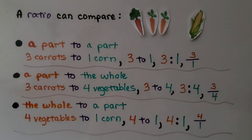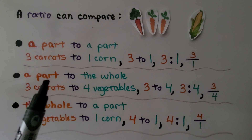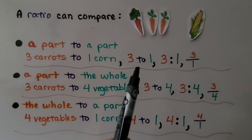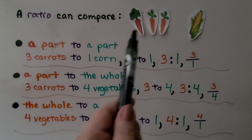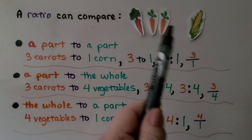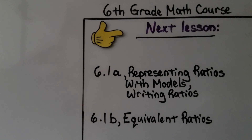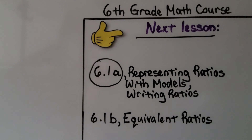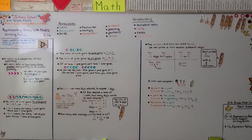Remember, we can compare a part to the whole or a whole to the part — it's not always just three carrots to one corn. We can compare it to the whole group, like three carrots to four vegetables. A ratio is a comparison of two quantities and tells us how many times greater one quantity is to another. Have a nice day — I hope you join me next time!